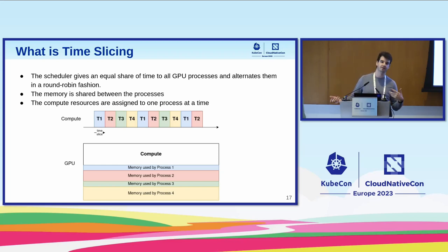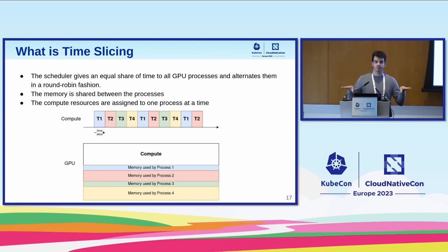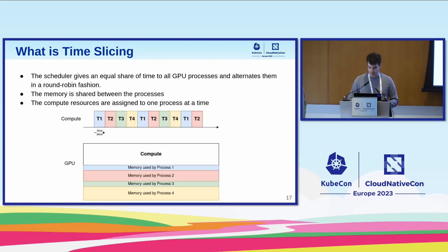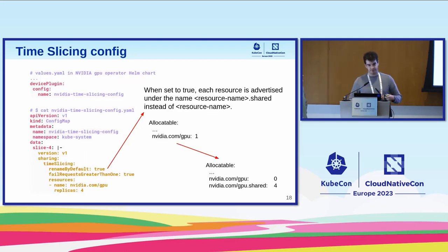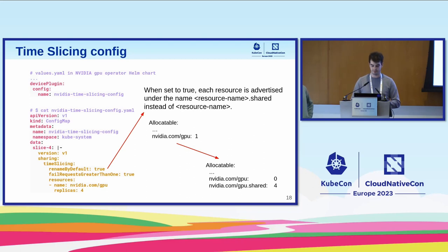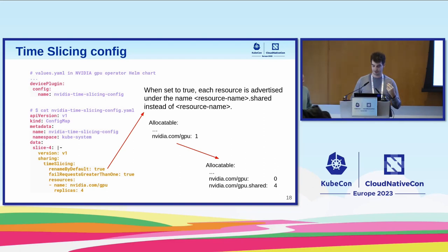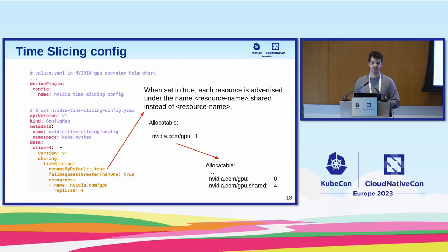With time slicing, the scheduler gives an equal share of time between GPU processes and alternates between them in a round-robin fashion. The memory of the GPU card is shared between all processes assigned to that card, though compute only happens for one process at a time. To configure this, we go back to our GPU operator Helm chart and set our nvidia.com/GPU resource to have four replicas. Using the rename-by-default tag, our resources will be renamed and appended with the .shared extension. Now we have one GPU on the node presenting as four GPU-shared resources.